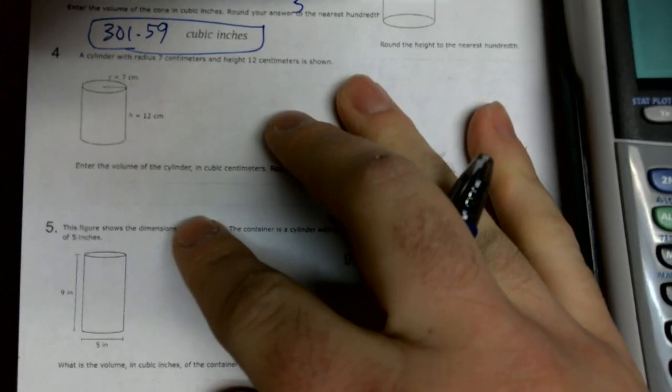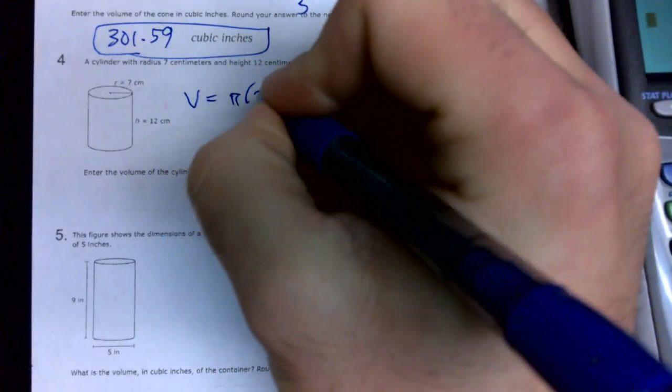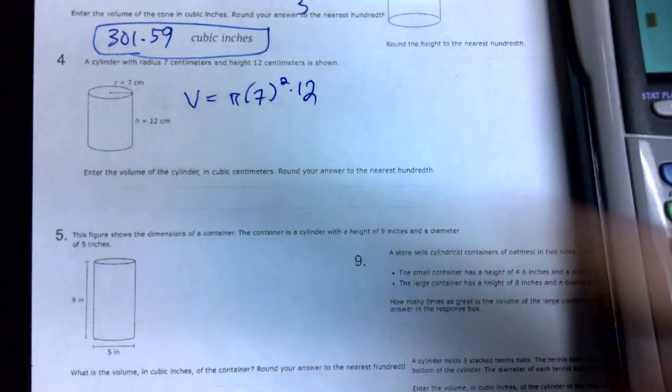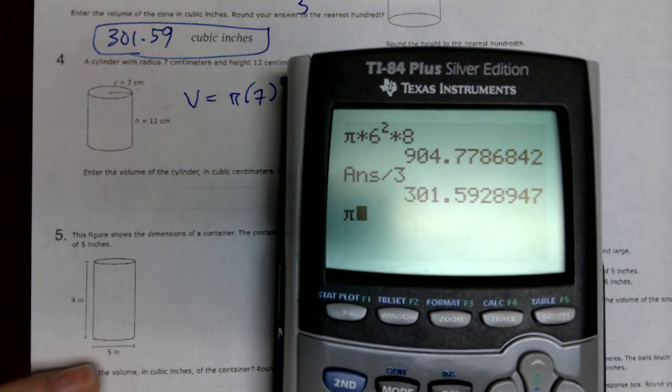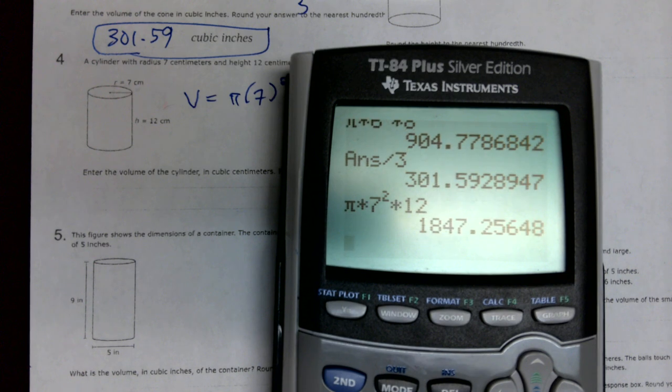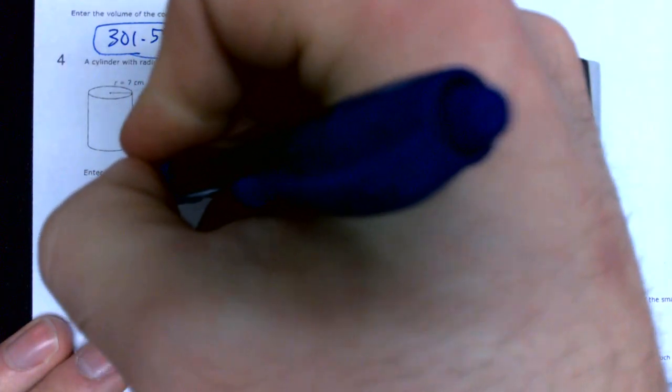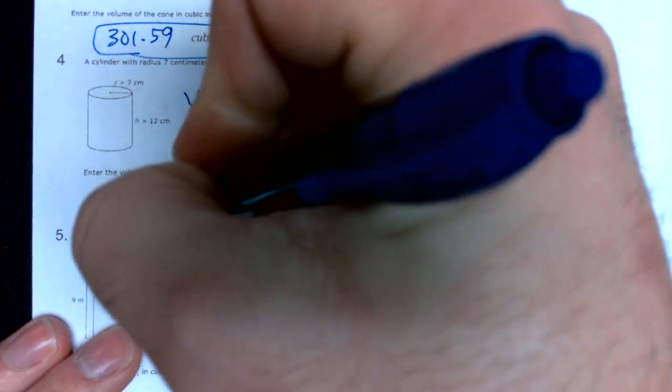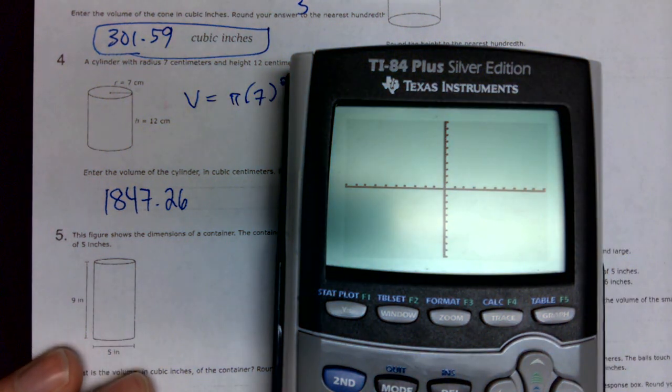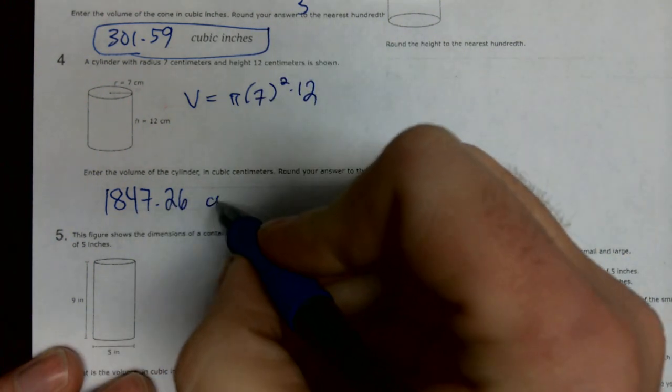Number four, we're back to a cylinder. We're going to do pi times 7 squared times 12. Pi times 7 squared times 12 gives us a large number, 1847.26. 1,847.26 centimeters cubed.